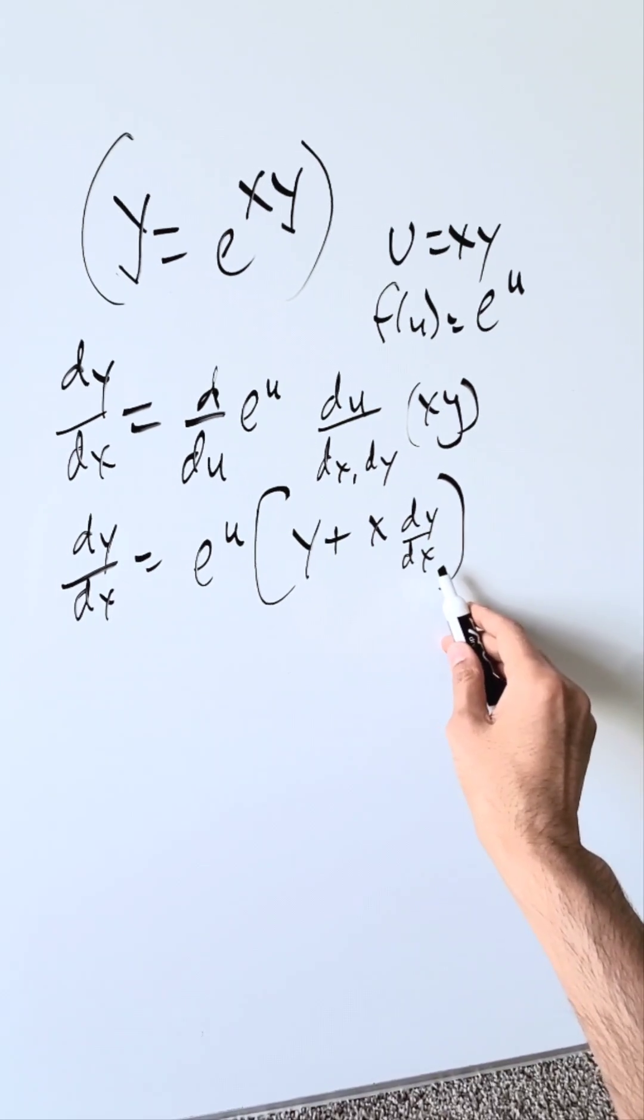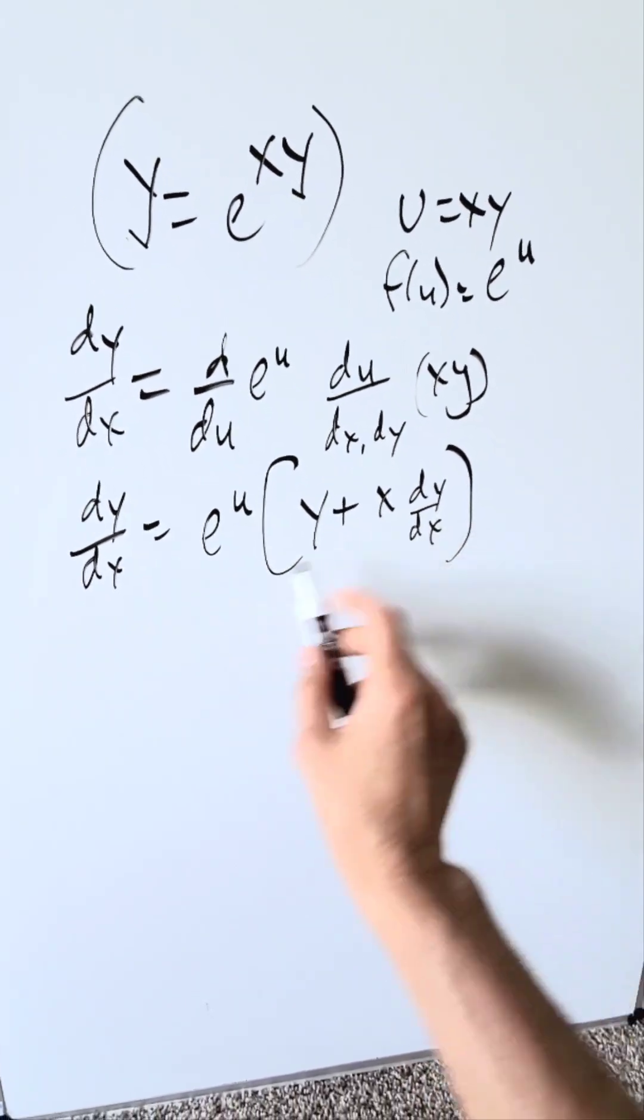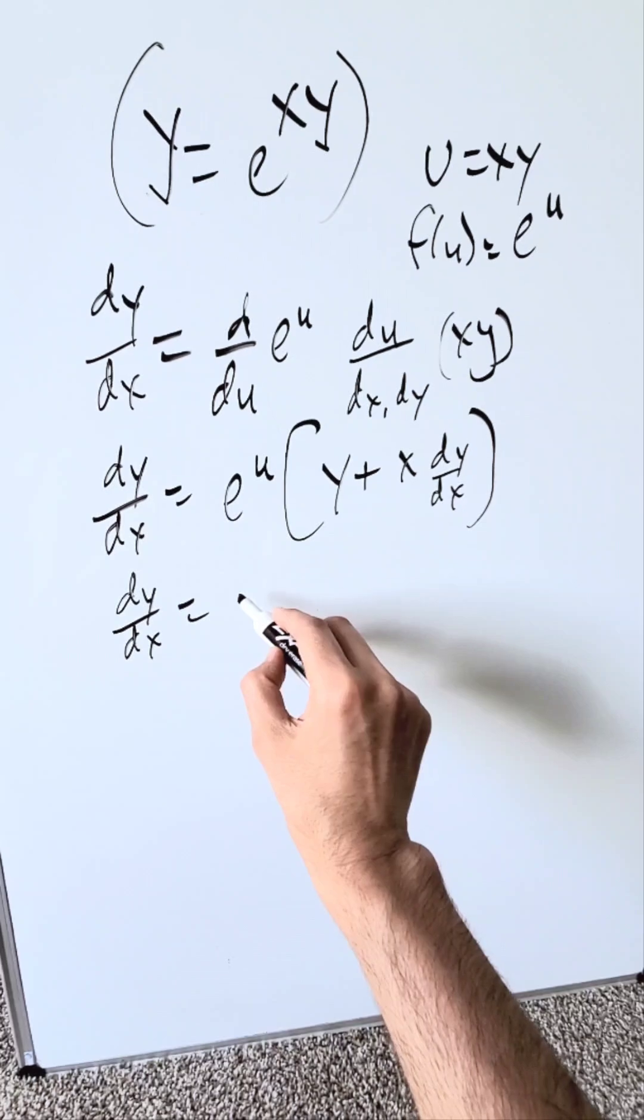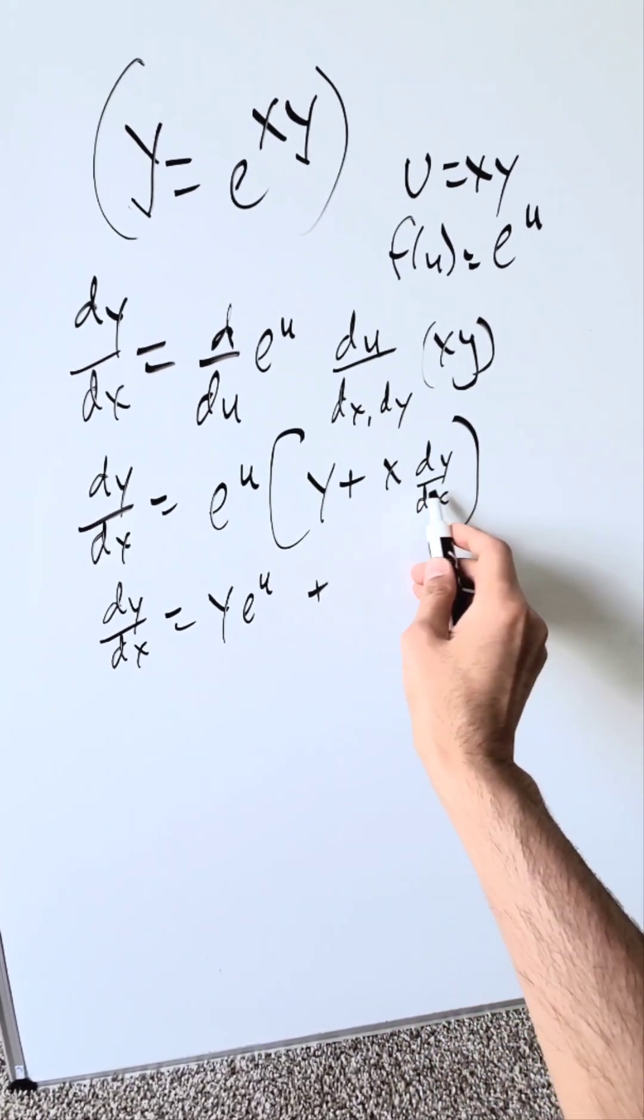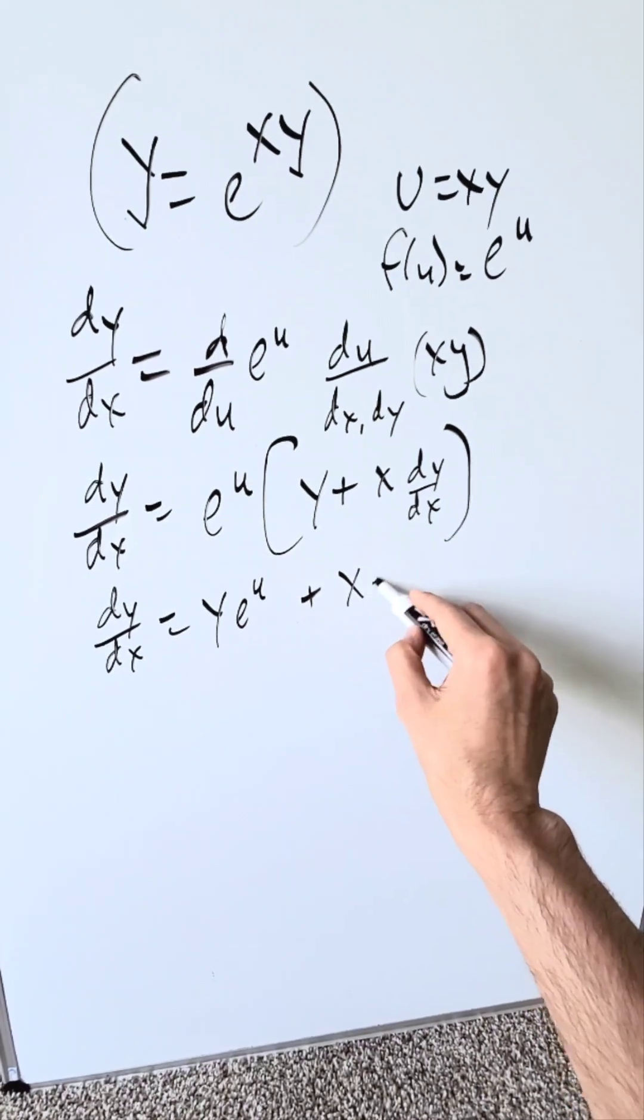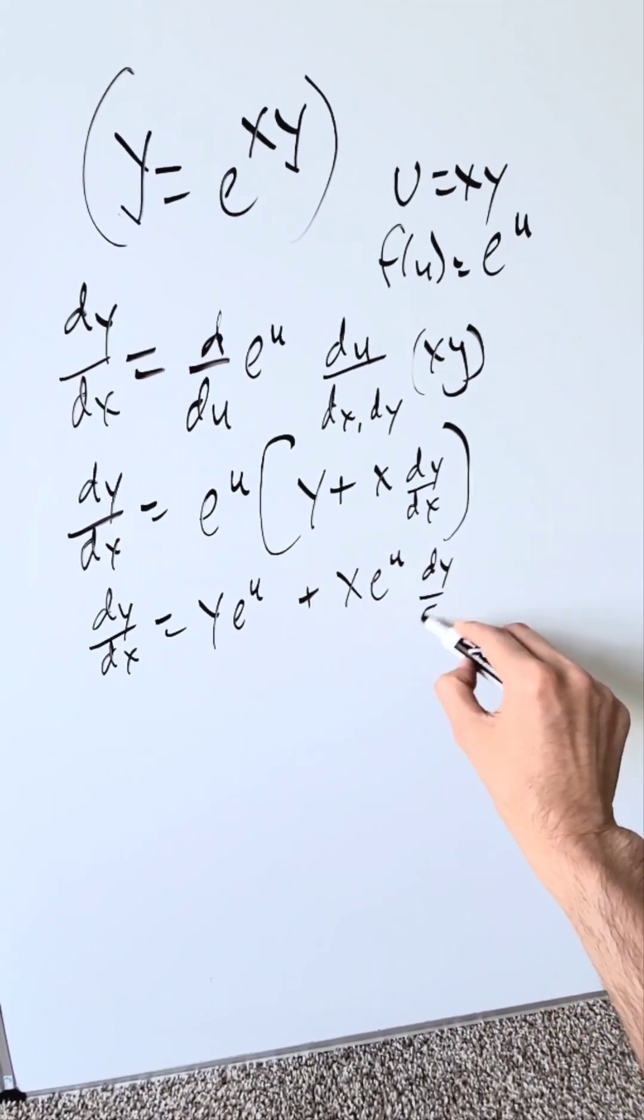You're solving here for dy/dx. Open this up. You have dy/dx equals y times e to the u plus, you see this x dy/dx, I'll multiply with that. I'll just write items in different order: x times e to the u times dy/dx.